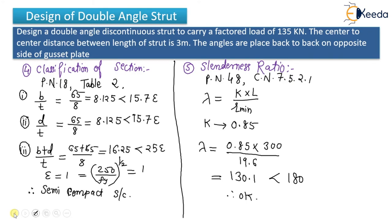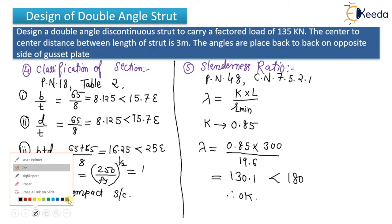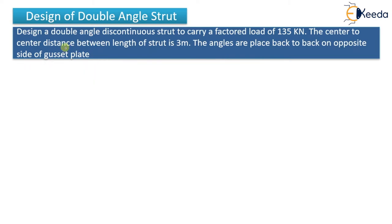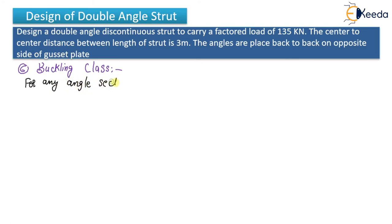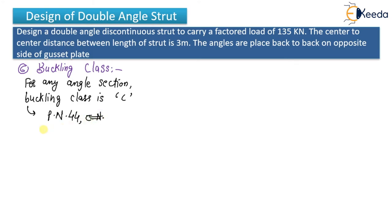Step six is the buckling class. For angle sections, the buckling class will always be C. This is given in table number 10 on page number 44 of IS 800:2007.